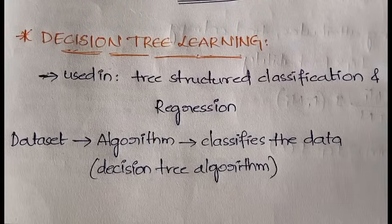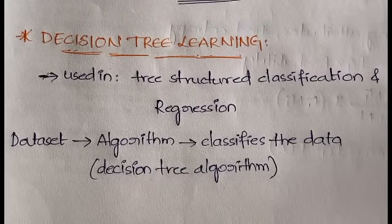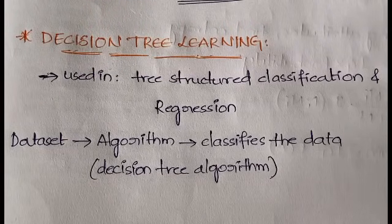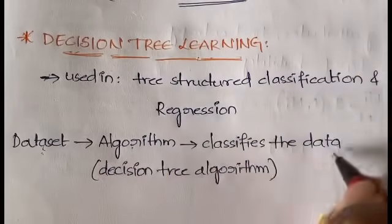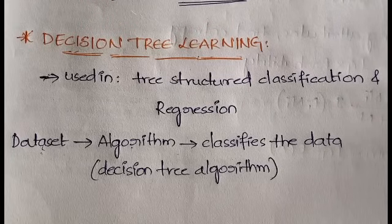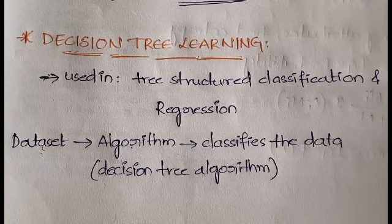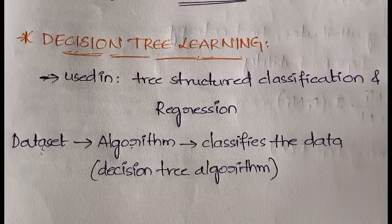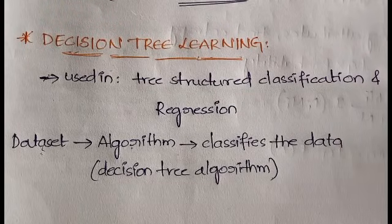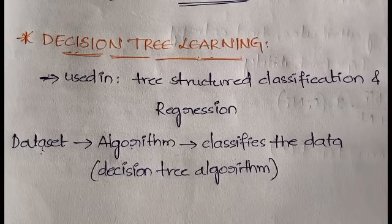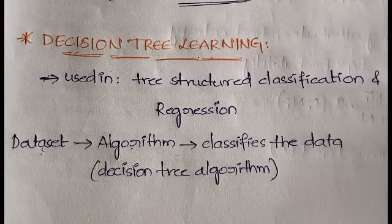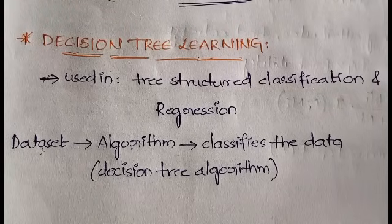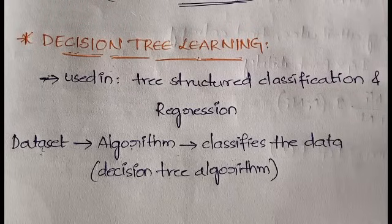Decision tree is a tree-structured algorithm which can be used in both classification and regression. Here we are going to see how it is implemented in classification. When you have a raw dataset and give it to an algorithm, that algorithm classifies the data — and here the algorithm we're using is the decision tree algorithm. The classifier tells you which class the data belongs to: yes or no, positive or negative. It divides the data into two, three, or four subcategories based on context.